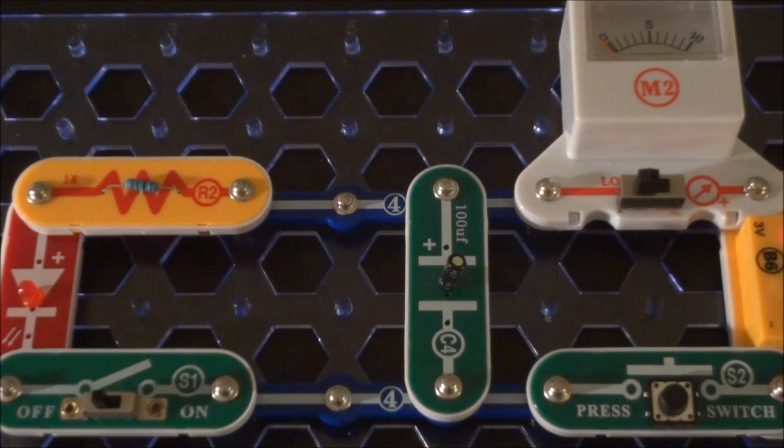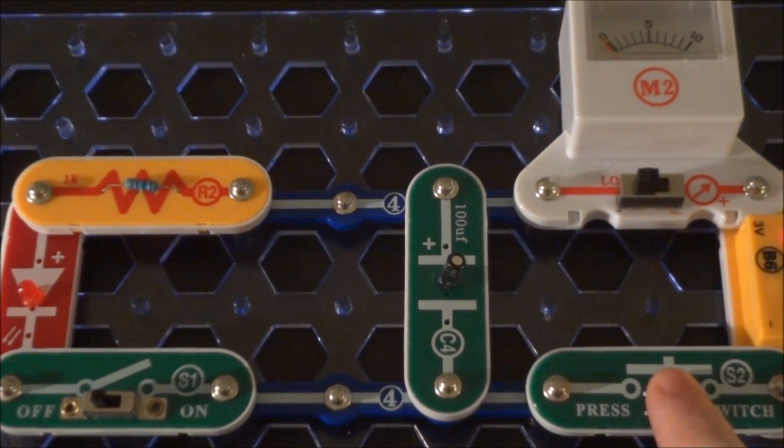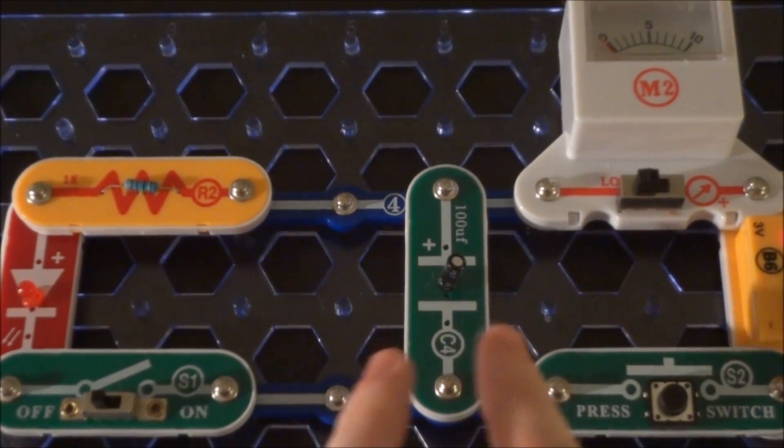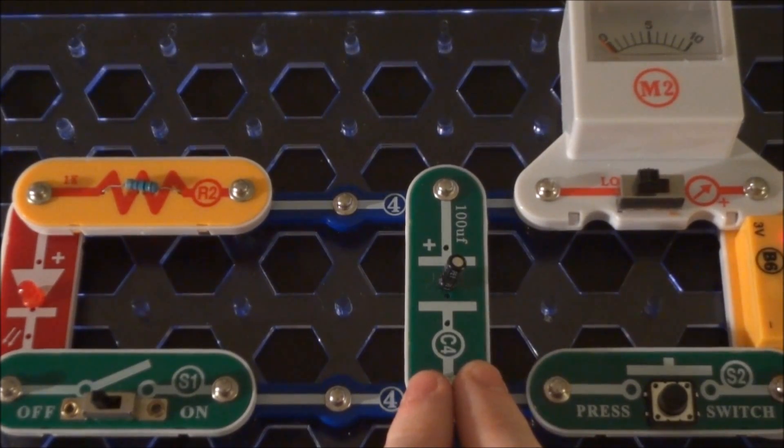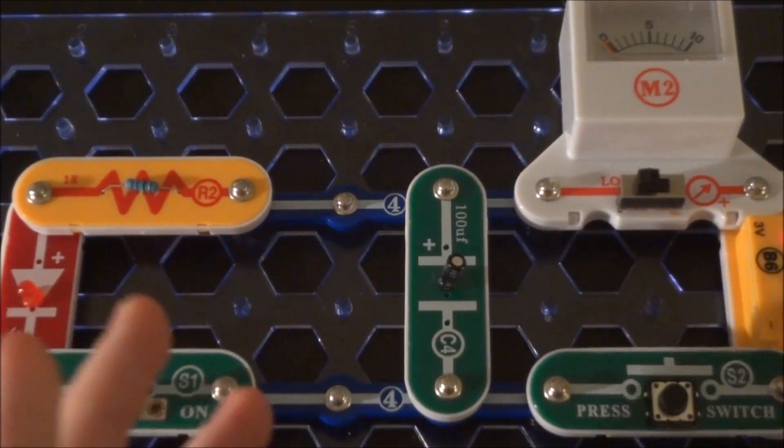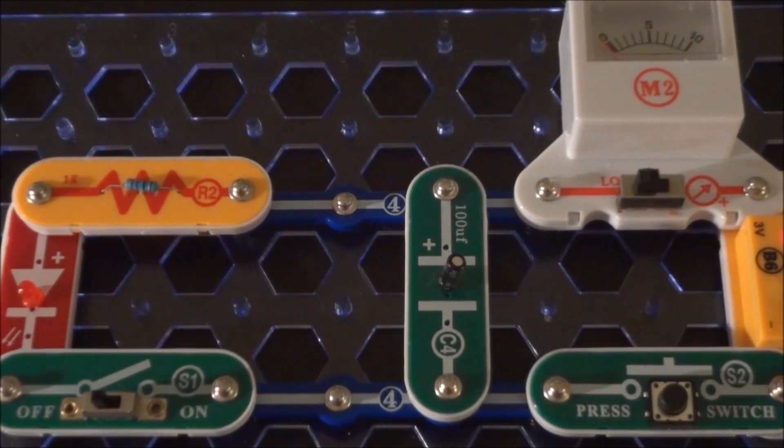Now I'm going to hook this 100 microfarad up in parallel and we're going to compare how long the LED stays on versus that 470 microfarad one. It's all connected up here, let me charge it up. Notice it went up and then went back down really quick. The smaller size capacitor didn't have to take as long to charge up. It's a smaller value, doesn't have as much charge capacity as the other capacitor, so it doesn't take as long to charge up.